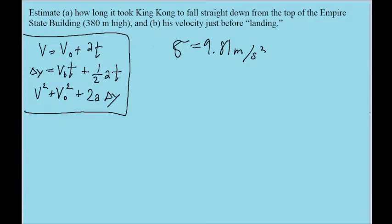So the other variables we're given include how far he's fallen, because we're given the height of the building as 380 meters. We can also assume that the initial velocity is zero, since it says he's falling, which presumably means he's falling from rest.